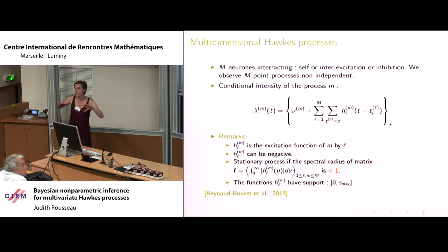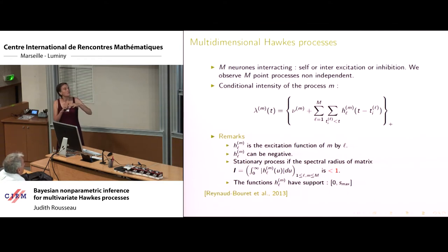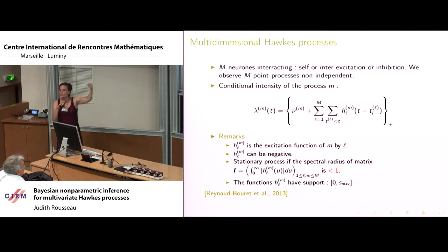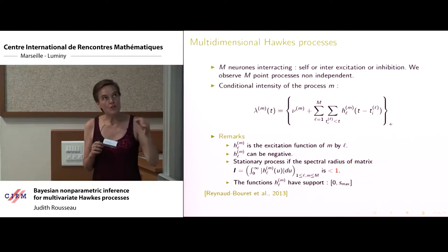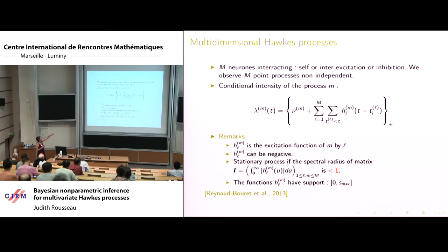What we're really interested about are multiple neurons, so we have a multivariate version of what I've just described. You have N neurons, each firing spikes. They are not independent — spikes fired at neuron 1 can influence following spikes for neuron 2, neuron 3, and so on. For each neuron m, you have a conditional intensity function: a constant nu_m plus interaction terms from all other neurons and their past.